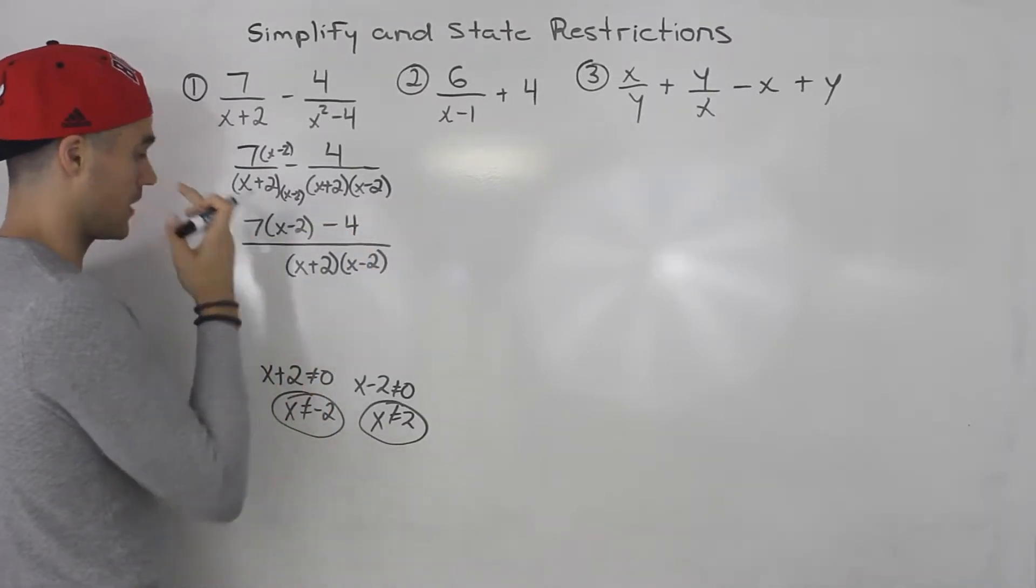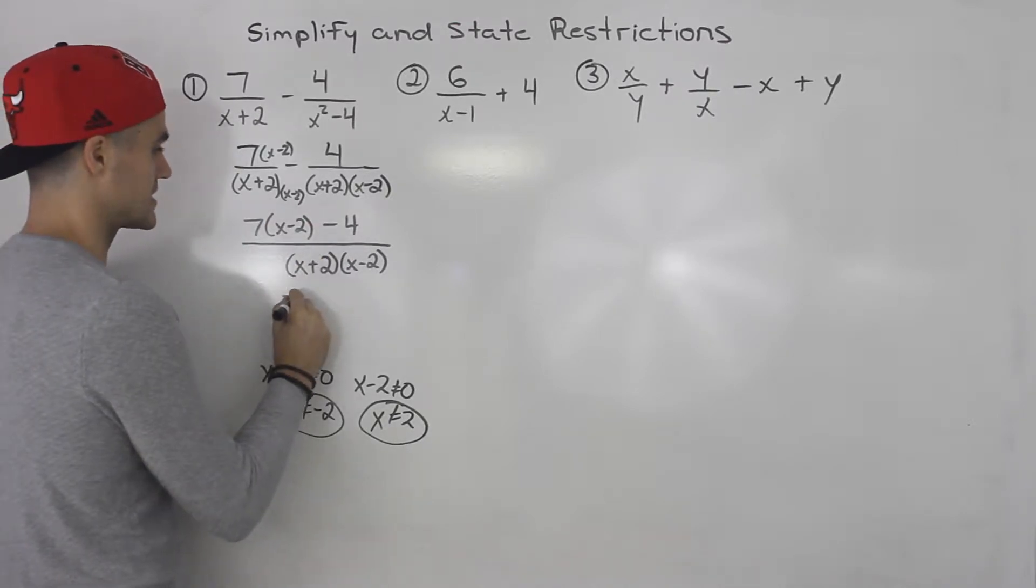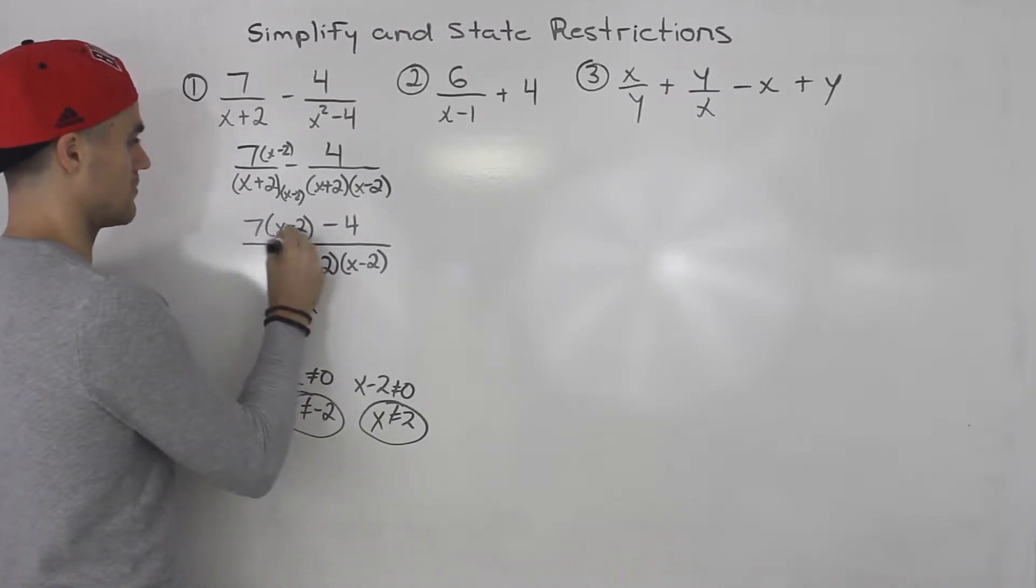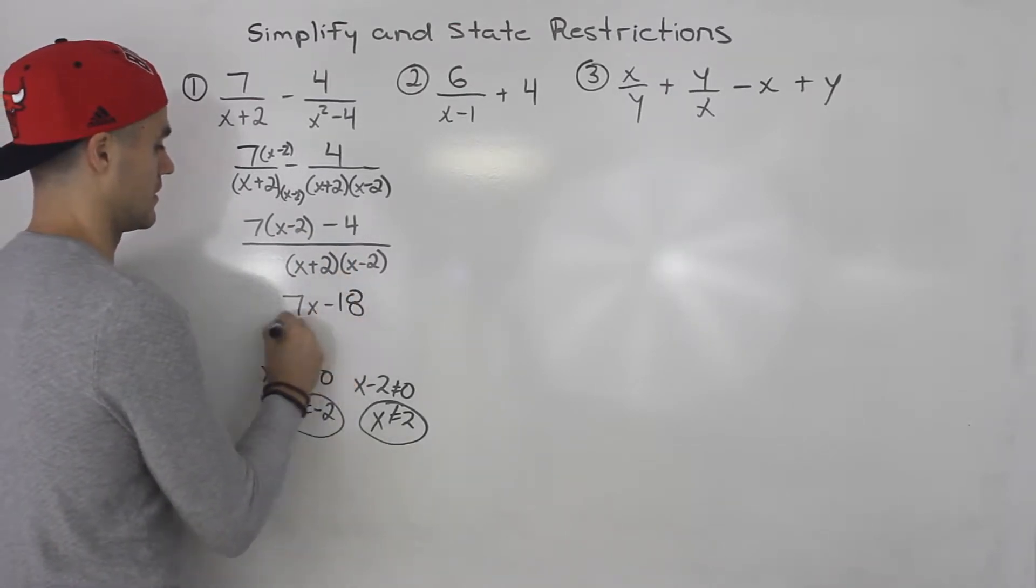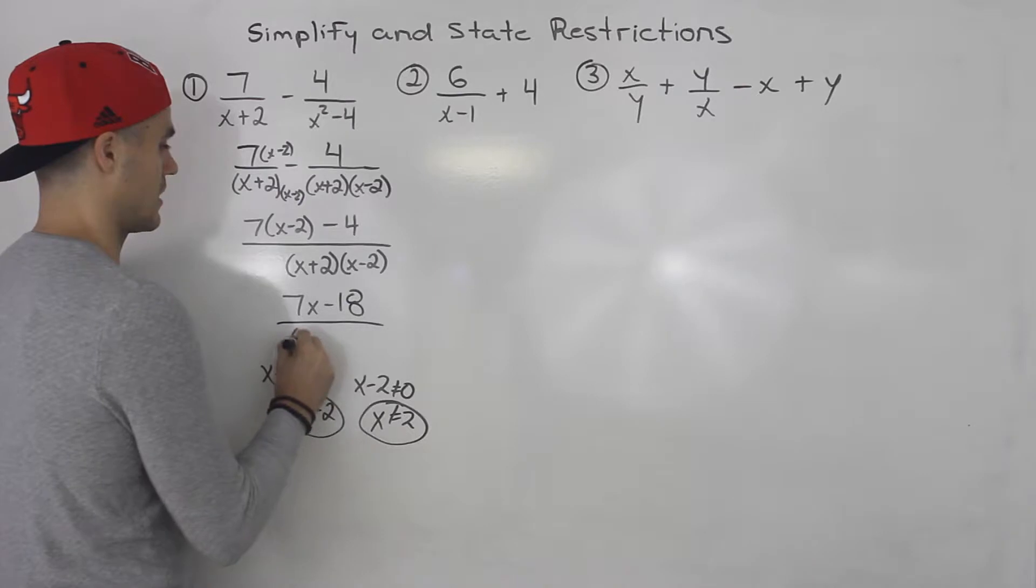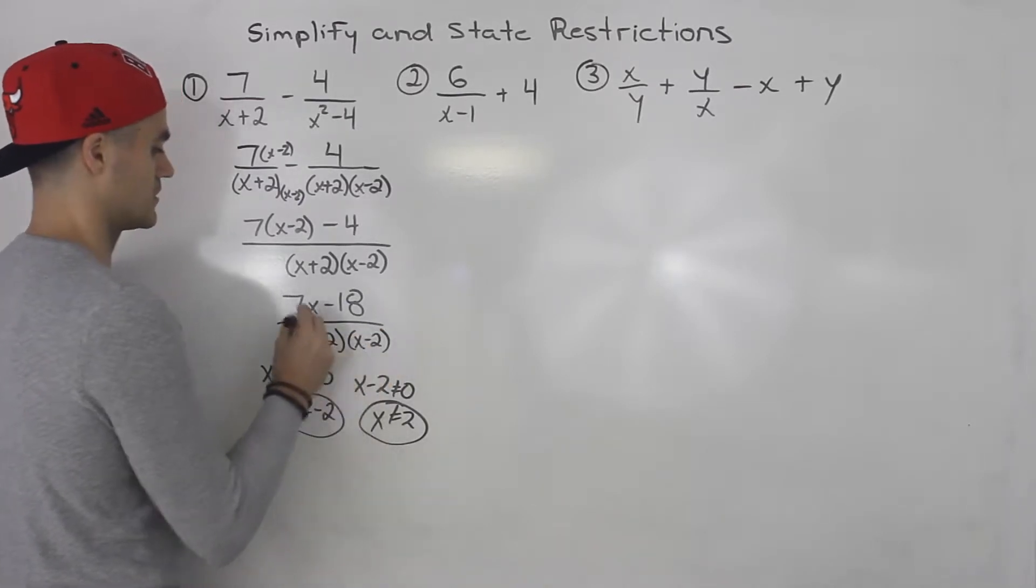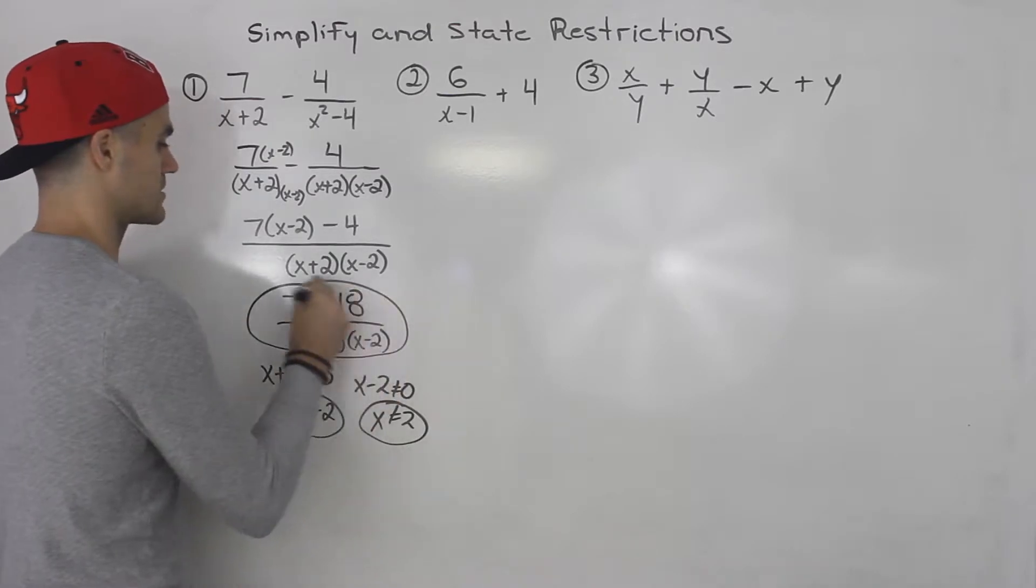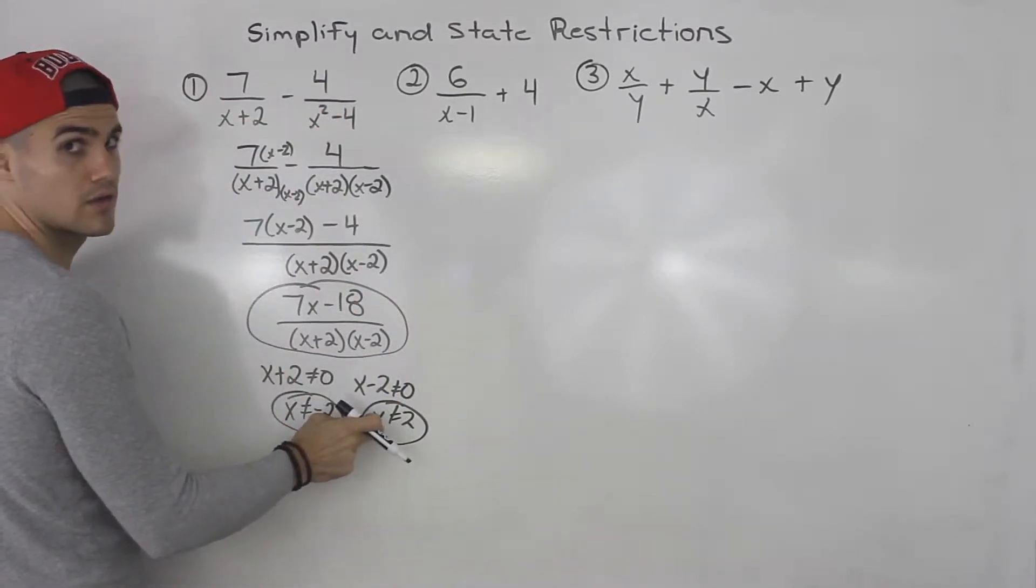And then when we expand everything, we'll end up with 7x minus 14 minus 4, which is minus 18. And this will be x plus 2 times x minus 2. So that's what this simplifies to, and then those are the restrictions.